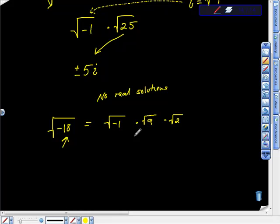The square root of 9 is 3, the square root of negative 1 is i, and the square root of 2 is just the square root of 2. So we add a plus or minus to the front, and there's our answer.